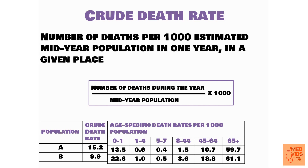Population A had a higher crude death rate despite lower age-specific death rates because it has a larger proportion of older people, and older populations naturally have higher death rates. Population B had relatively fewer older people and more younger people, but this younger population was experiencing higher mortality — which is bad, since younger populations should not have high mortality naturally. This illustrates why crude death rate alone is insufficient to draw conclusions.